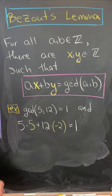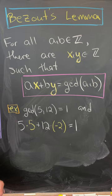And that is, for all integers A and B, we can find integers X and Y such that AX plus BY is equal to the GCD of A and B. In other words, the GCD can always be written as a linear combination of the two numbers.